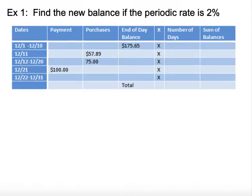For our first example, I made a table so that it would be easier to keep track of everything. From December 1st to December 10th, we have an end-of-day balance of $175.65.